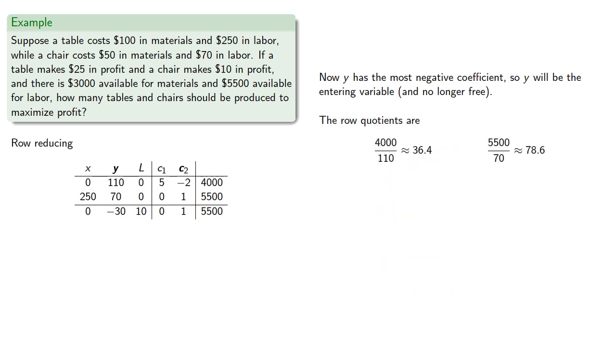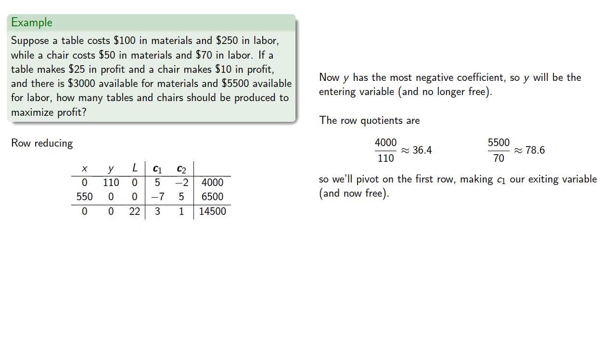We'll pivot on the first row, making c1 our exiting variable and now a free variable. Again, row reducing gives us, and we're not going to bother to make the pivots equal to 1.